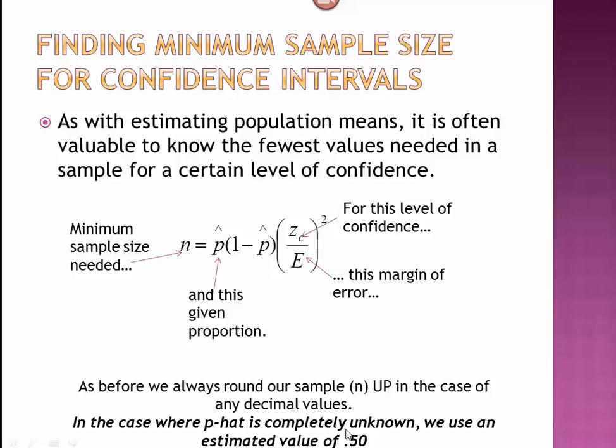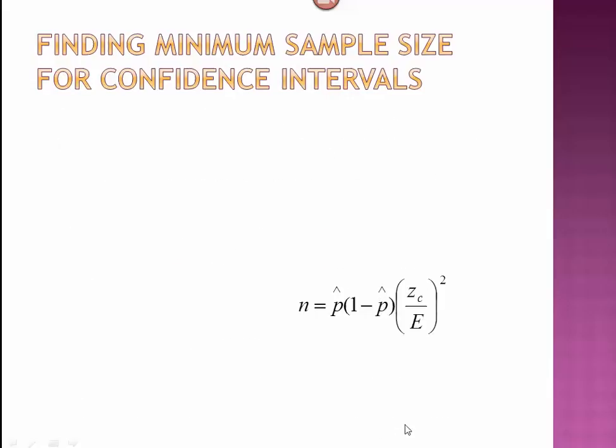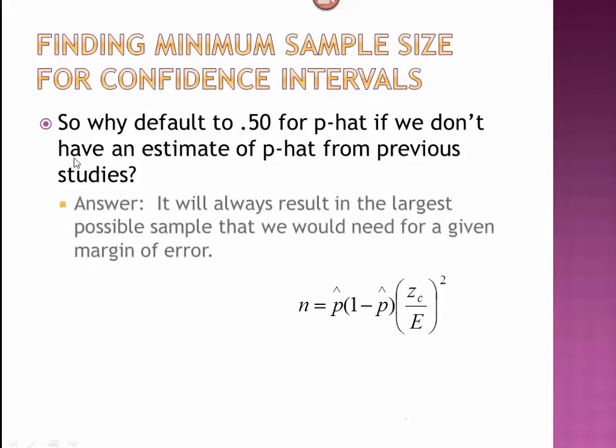Why would we do that and not just go at 50%? Here's the problem. The default for p-hat is 0.5 if we don't have an estimate of p-hat from previous studies. Why do we do that? Because it will always result in the largest possible sample that we would need for a given margin of error and a given level of confidence. Let's say we just use 0.5 as an estimate for p-hat. That would give us 0.5 times its complement, which is also 0.5, giving us 0.25.